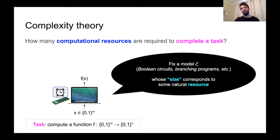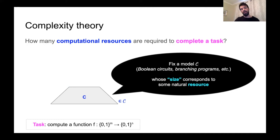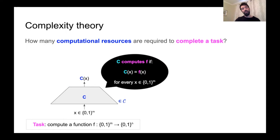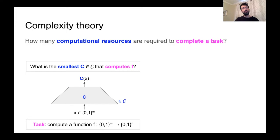In order to formalize the use of these resources, we fix a computational model, and that model usually has some size parameter which corresponds nicely to one of these computational resources. Given a so-called computer from our computational model, we say that it computes the function f if, for every possible input x, the output of c on x is the same thing as f of x. The question becomes: what is the smallest c from our computational class that computes f? We can call this the complexity of computing, or computational complexity.